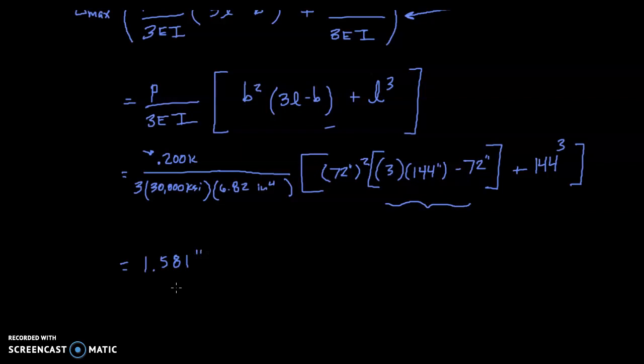Which I realize is different than what I have in my PowerPoint. But I also realize that the I value for a 4 inch standard weight steel pipe in the current edition of the book is apparently different than what it was in the past. I was using 6.82 in this example rather than the 7.23 in the previous example.